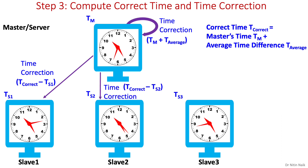Similarly, the time correction for slave 2 is T-correct minus TS2. Note that this adjustment time could also be positive or negative, and it does not send an absolute time — instead, it only sends the adjustment time. Therefore, transmission delays do not interfere with synchronization.